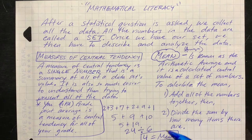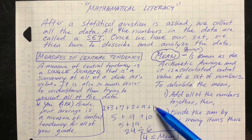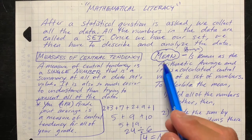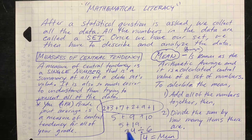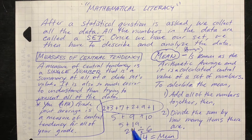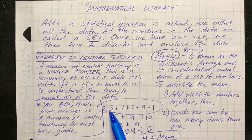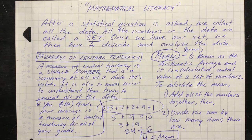24 divided by 6 equals four, so four is going to be the mean — that's the average out of all these numbers. Step one: add all the numbers up. Two plus three plus seven plus two plus nine plus one equals 24. Step two: divide by how many numbers there are — six numbers. 24 divided by six equals four. And that's going to be your average, the mean.